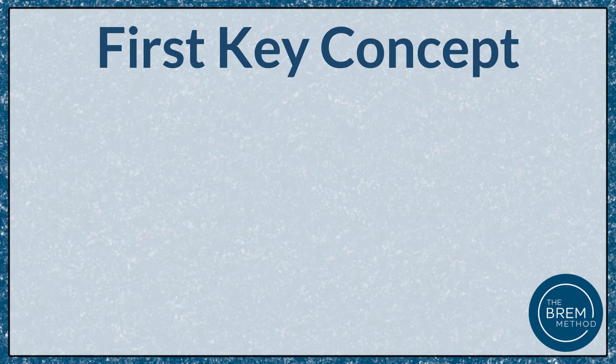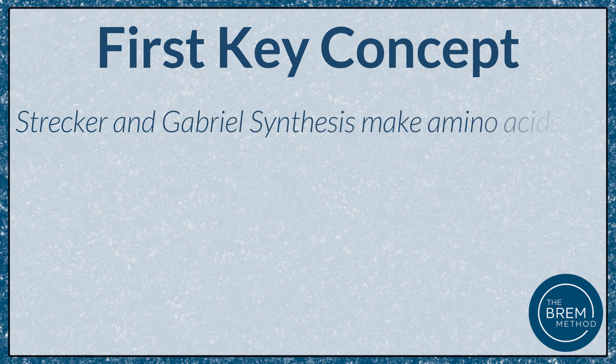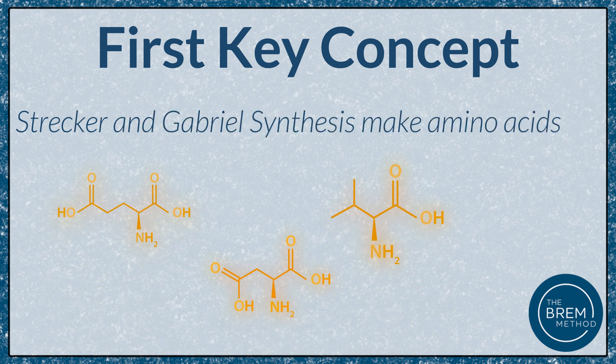What do these reactions do? Both Strecker synthesis and Gabriel synthesis make amino acids. That's why they're so important and relevant for the MCAT, because amino acids are such important molecules. That also means that if your passage or question stem is not about making amino acids, don't pick Strecker synthesis or Gabriel synthesis as your answer.